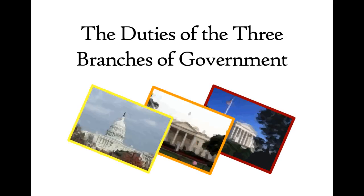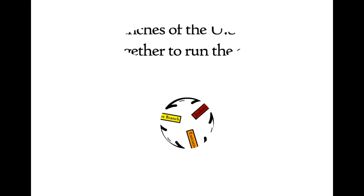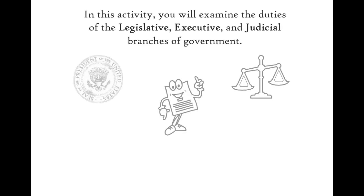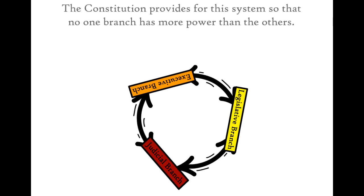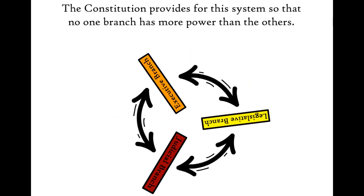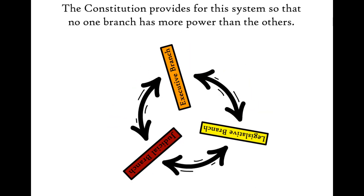The Duties of the Three Branches of Government. The three branches of the U.S. government work together to run the country. In this activity, you will examine the duties of the legislative, executive, and judicial branches of government. The Constitution provides for this system so that no one branch has more power than the others.